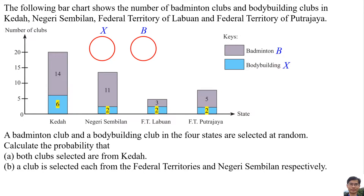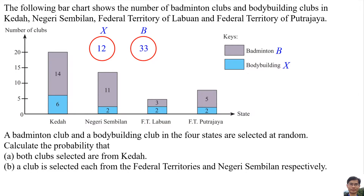The total number of bodybuilding clubs is 6 plus 2 plus 2 plus 2 equals 12, and the total number of badminton clubs is 14 plus 11 plus 3 plus 5 equals 33.